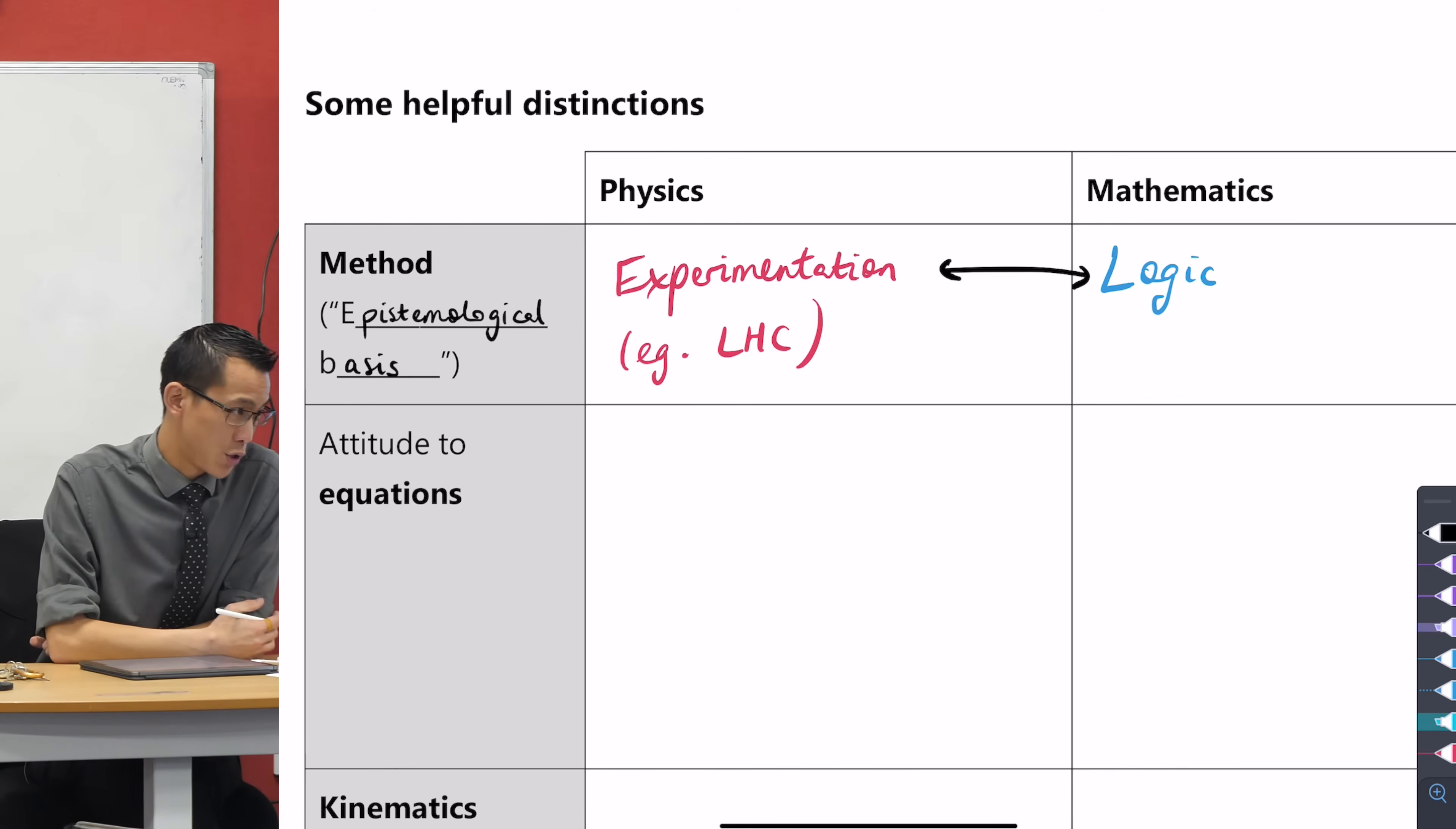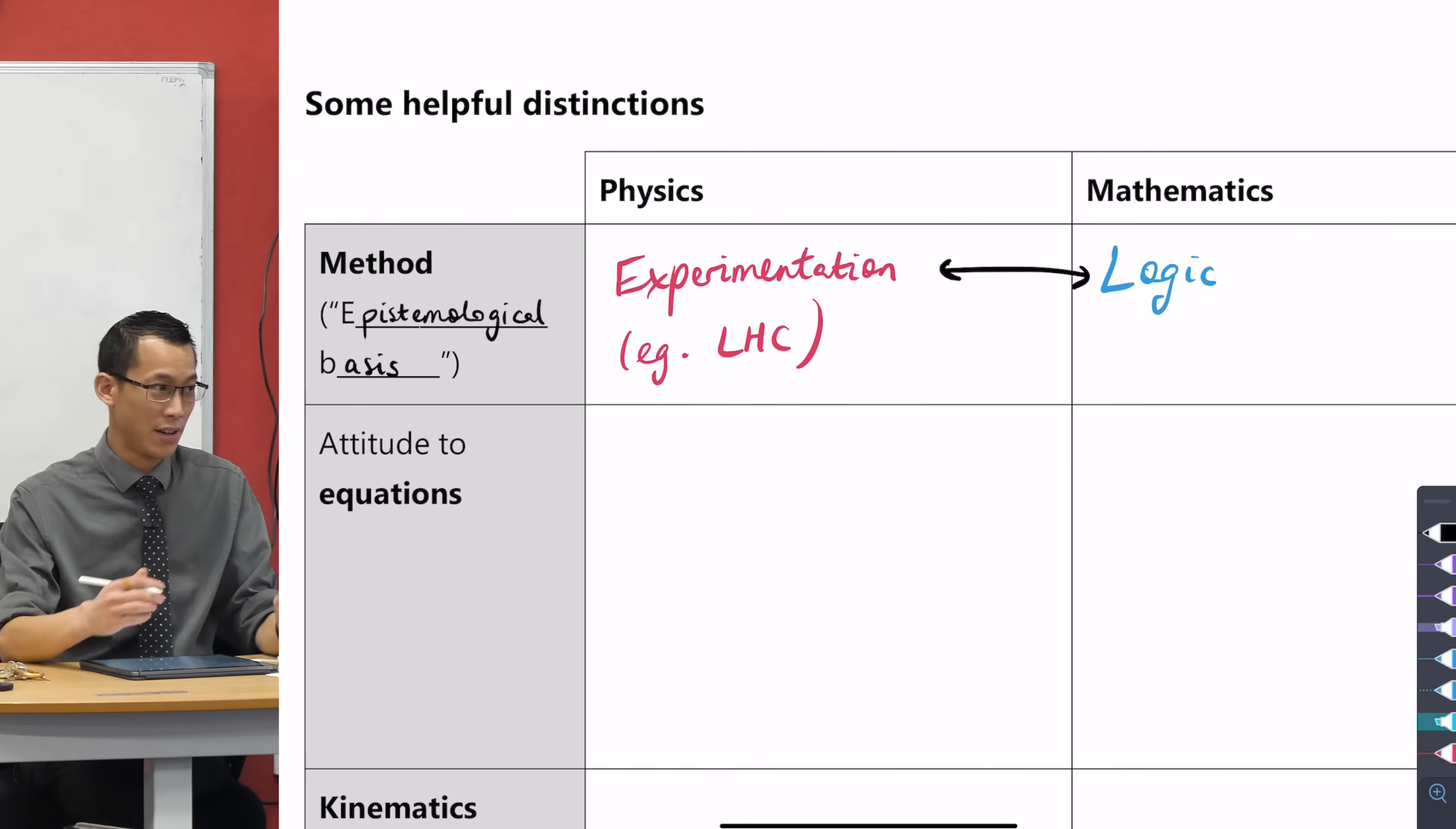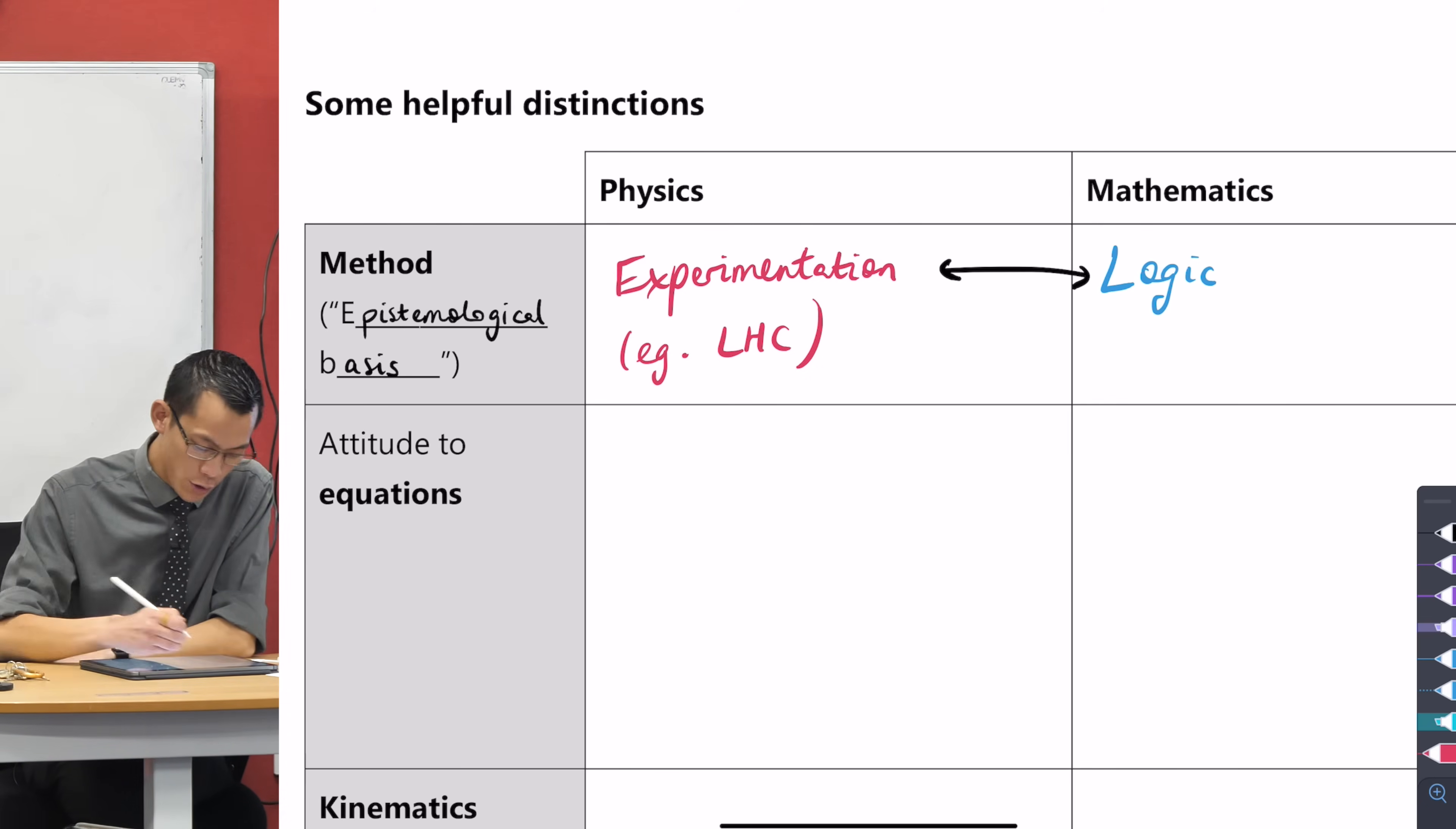Key point of distinction number two. What is the attitude that physicists have, and you studying physics have, to equations? And the answer is, you just use them. You get given equations, you just use them. I would say you use them as appropriate.